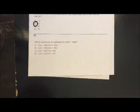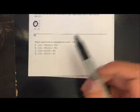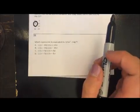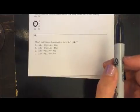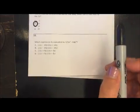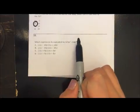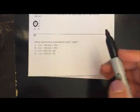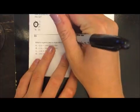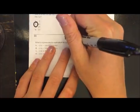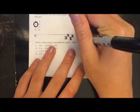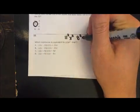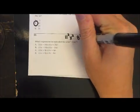Okay, and then number 33 says which expression is equivalent to 121x squared minus 64y squared. What's important is that we notice these are the differences of two perfect squares. This is something we need to recognize in algebra: 121 is 11 squared, x squared is x squared, 64 is 8 squared, and y squared is y squared.